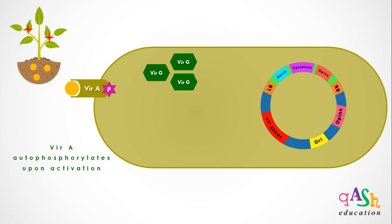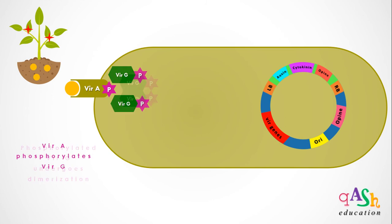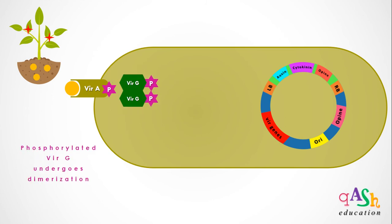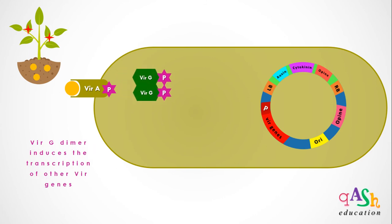Upon activation, VirA, being an autokinase, undergoes phosphorylation. Phosphorylated VirA then activates VirG by phosphorylating it. Upon phosphorylation, VirG undergoes dimerization, and this VirG dimer then begins the transcription of other vir genes by binding at their promoters.